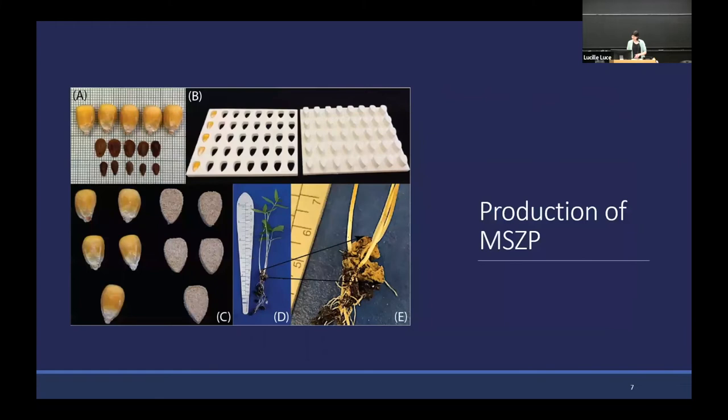This next slide is a method figure about how we make the MSVP — these pellets shaped like crop seeds. In the first image, the top row is corn seeds on a millimeter grid, the next row is milkweed seeds, and the bottom row is milkweed seeds that have been de-winged — we've removed the outer wing-like portion of the pericarp to make it easier to fit them in the pellets.